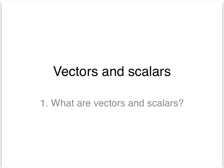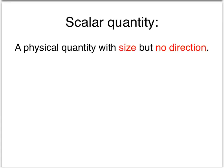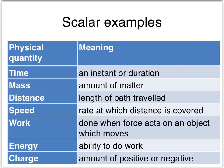What are vectors and scalars? A scalar quantity is a physical quantity which has size but no direction. Here are some examples of scalar quantities.